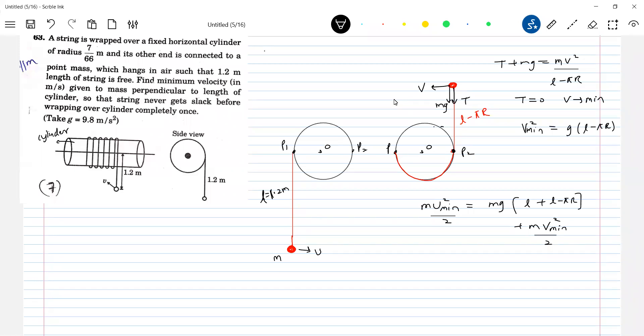I think the wrapping over cylinder completely once, not many times. So this was the wrapping. Again, don't put complete one circle. It will wrap here. So what is the length of the string? How much it will decrease by pi R? So L minus pi R. 7 meter, it will come. Check answer later on.